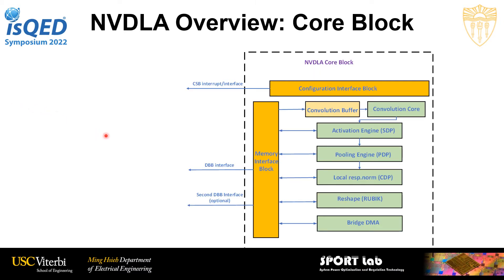I will give an overview of the NVDLA architecture core block. This core block has multiple parts: the configuration interface block, memory interface block, convolutional buffer, convolutional core, STP, PDP, CDP, Rubik, and BridgeDMA. The focus of our work will be on the convolutional core, which is an important part of NVDLA.